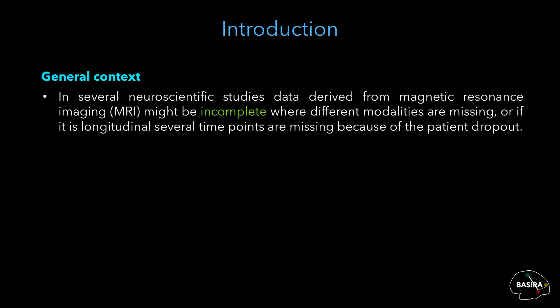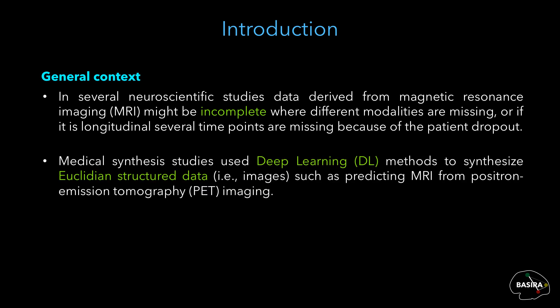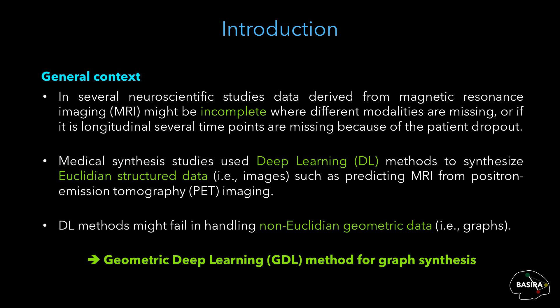In several neuroscientific studies, data derived from magnetic resonance imaging, or MRI, might be incomplete where different modalities are missing, or if it is longitudinal, several time points are missing because of patient dropout. To address this issue, recent medical synthesis works use deep learning methods to synthesize Euclidean structured data such as predicting MRI from positron emission tomography or PET imaging. However, these deep learning methods might fail in handling non-Euclidean geometric data such as graphs, so we propose a geometric deep learning method for graph synthesis.